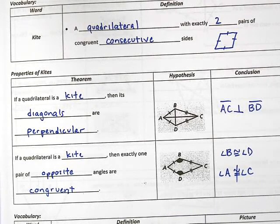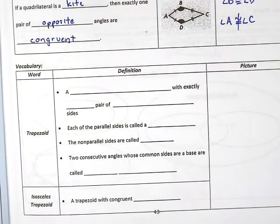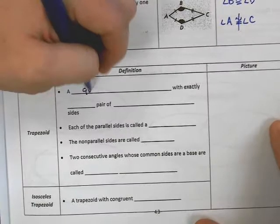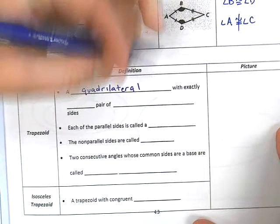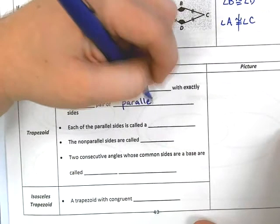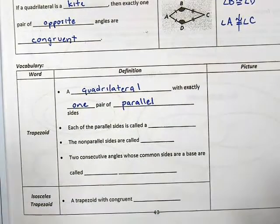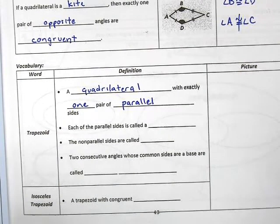Alright, so there are some properties of kites. We'll practice in a little bit. Let's jump down to the bottom and start talking about trapezoids. So a trapezoid is a quadrilateral with exactly one pair of parallel sides. So this is how we differentiate between trapezoids and parallelograms. If there's one pair of parallel sides, then you have a trapezoid. If there are two pairs, then you have a parallelogram.